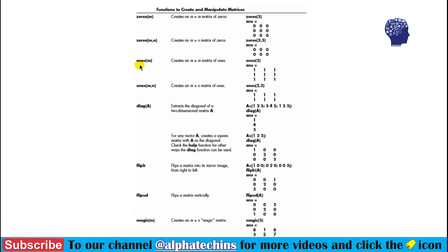The third function is ones, which creates an n by n matrix of ones. There is also an n by m version where we define the number of rows and columns.